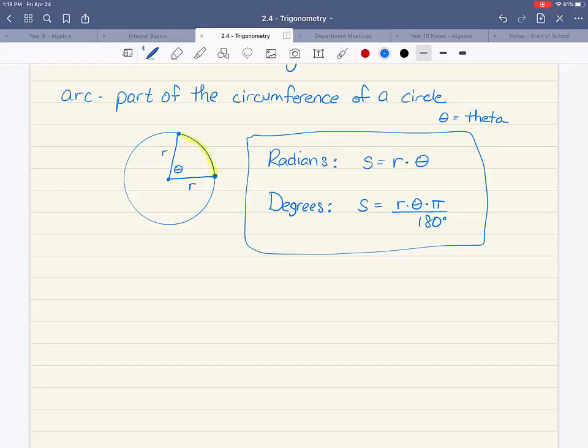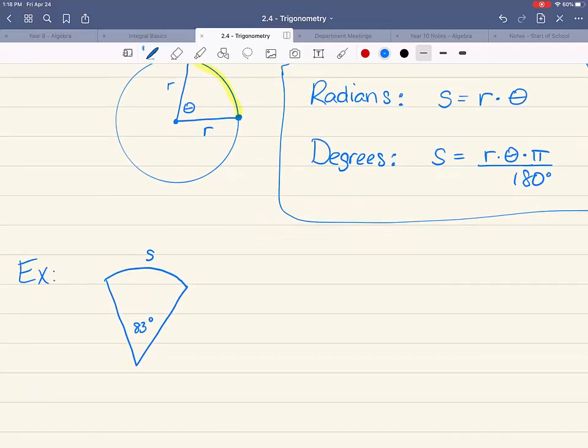Here are the two formulas for arc length. You use the formula based on what your angle is given to you. I will give you a couple of examples of this. I need to draw a picture first. We're finding S here. This angle here is 83 degrees, and the radius is 6.8 centimeters.